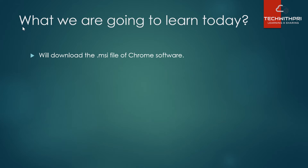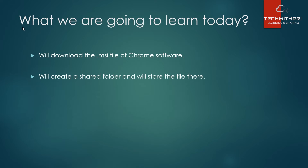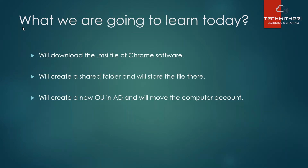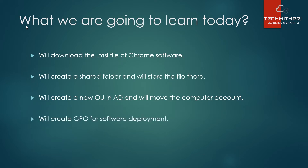I'll show you how to download Chrome in .msi format. Next, we'll create a shared folder and store the .msi installation file there. Then we'll create a new OU in Active Directory where we'll store the computer accounts, because this group policy will be applied to computers, not users — it is system-specific. There are two types of policies in GPO: user and computer. Previously we did user; today we do computer. We'll create the OU, move the computer accounts there, create the GPO for software deployment, and finally test on the client machine whether it deploys automatically.